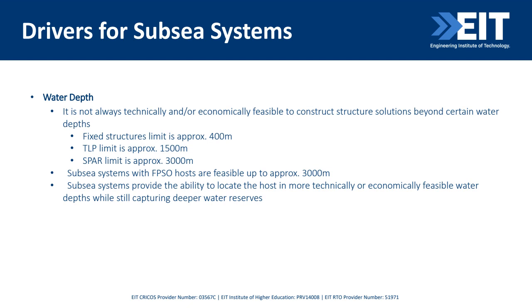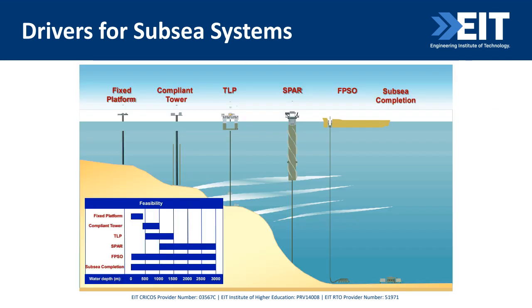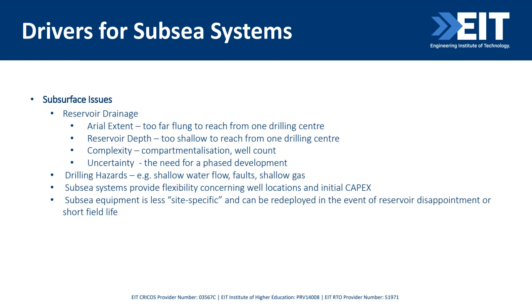FPSOs can be used for shallow water too, but can go to more than 3,000 meters, similar to semi-submersibles. Looking at the picture, as the driver changes with water depth, you see the progression from fixed platform at 400 meters, to compliant tower at 900 meters, to tension leg platform at about 1,000 meters, to spar and FPSO at 3,000 meters.